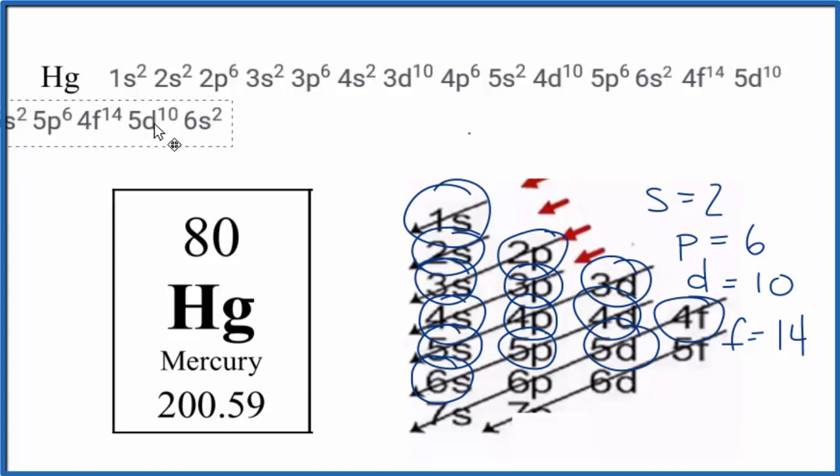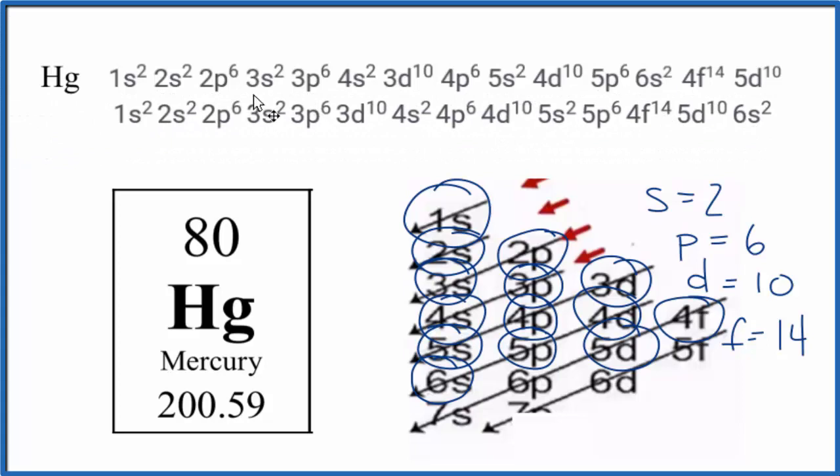Often, you'll see it written a little bit different, and this is okay to write it this way as well. What's different is that this 6s2 here, we now have it after the 5d, so we've moved the s's after the d's throughout here. The reason that's helpful is this 6s2, these are the electrons that will be lost when we form an ion.